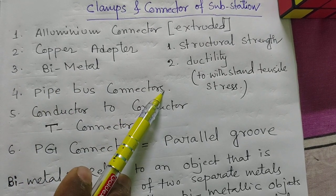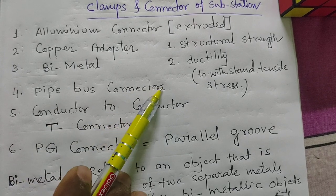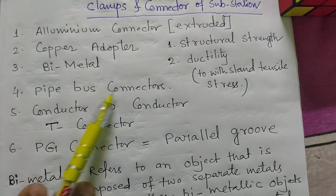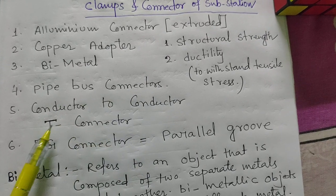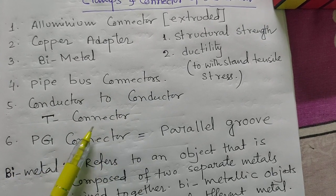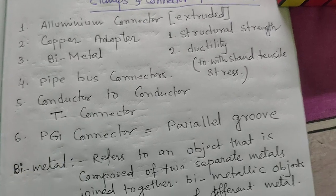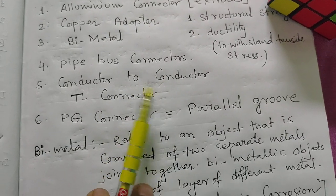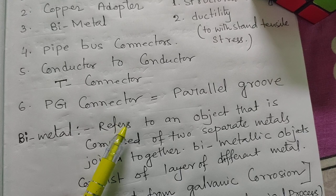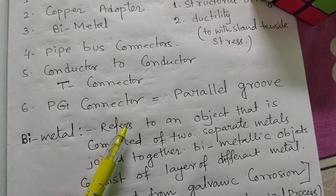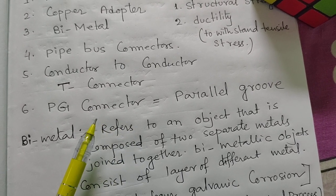Bimetals are used for all types of isolators which have stud systems. Pipe bus connectors are used at the 220 kV level, 400 kV level, 765 kV level, 132 kV level, and 33 kV level. Conductor-to-conductor connectors are also used from the highest voltage level to the lowest voltage level.